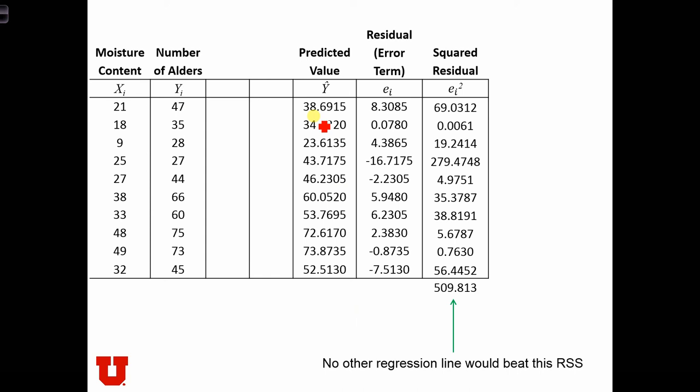So we have 47 minus 38, 8.3. 35 minus 34.9, 0.07. Where the residuals are close to zero, the regression line passes very closely to the observed y values. And where the residuals are far away from zero, the regression line either overestimates or underestimates the value of the dependent variable.